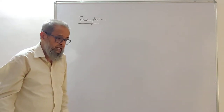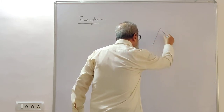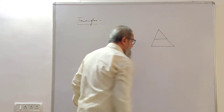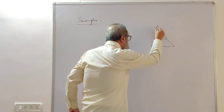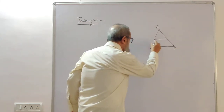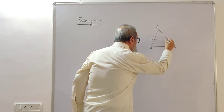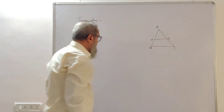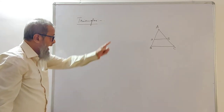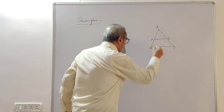Now the first thing we have to learn is that in a triangle, if I draw a straight line parallel to one of the sides — let me take this as triangle ABC. BC is one of the sides. I have drawn a line DE parallel to BC, and it cuts the sides AB and AC at points D and E respectively, as indicated in the figure. So DE and BC are parallel to each other.